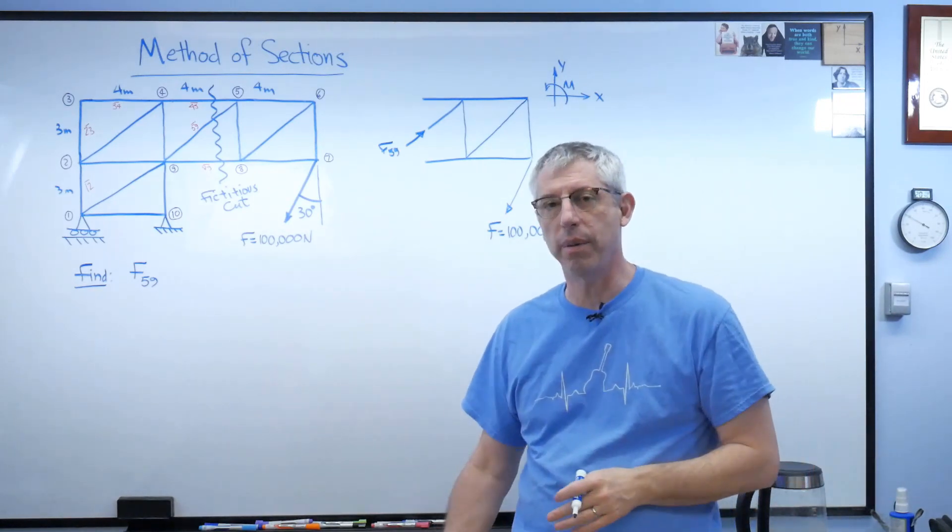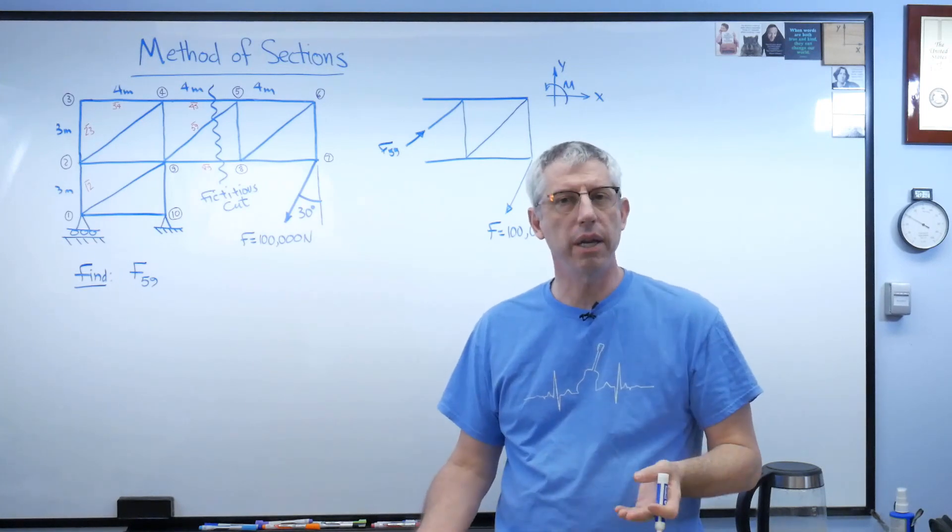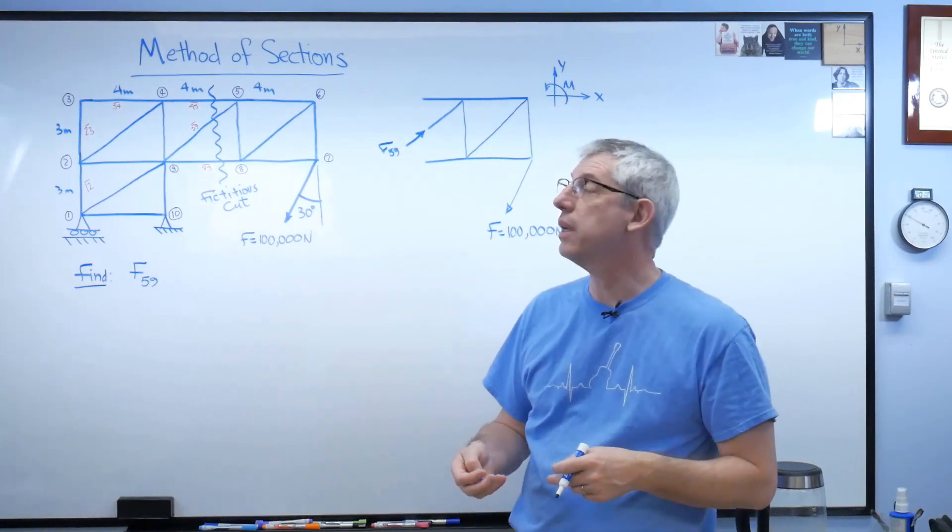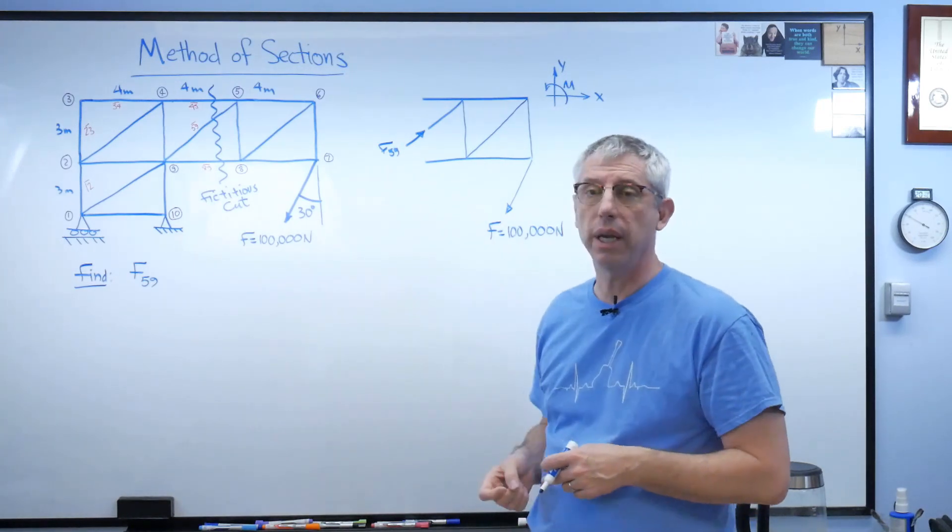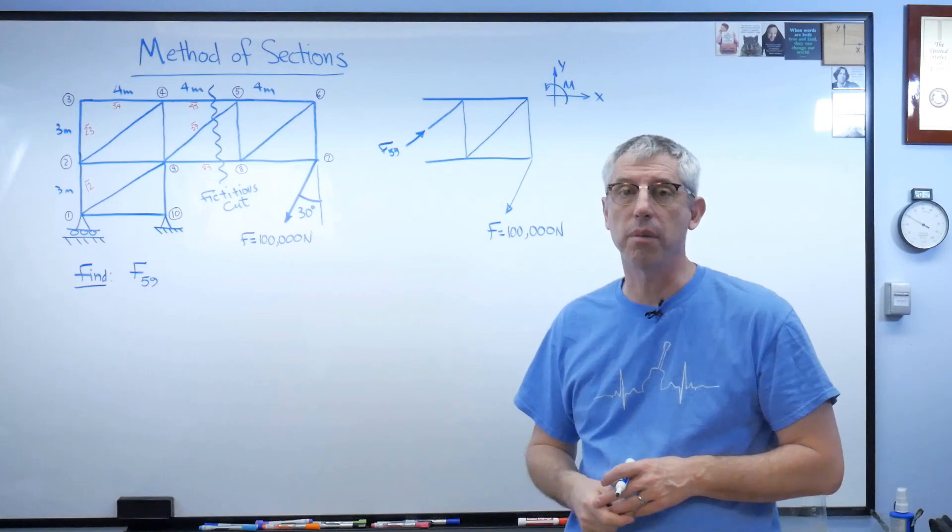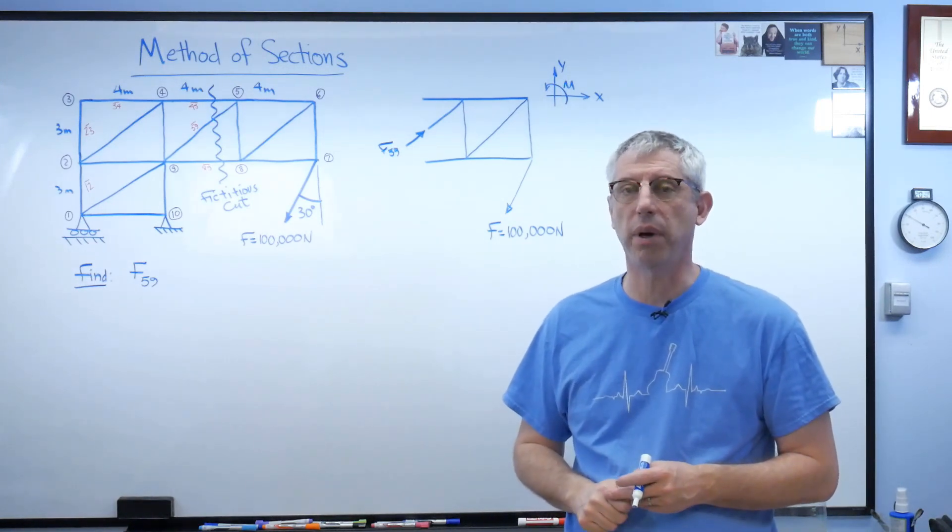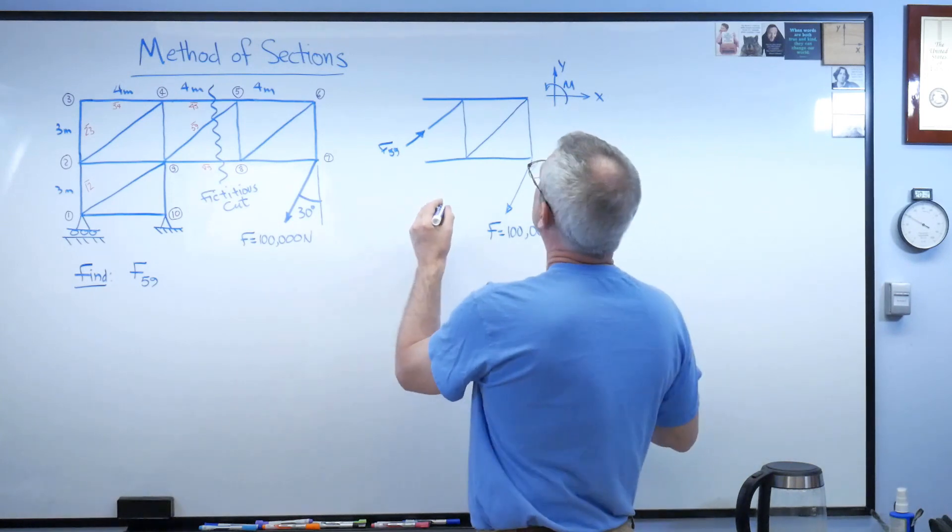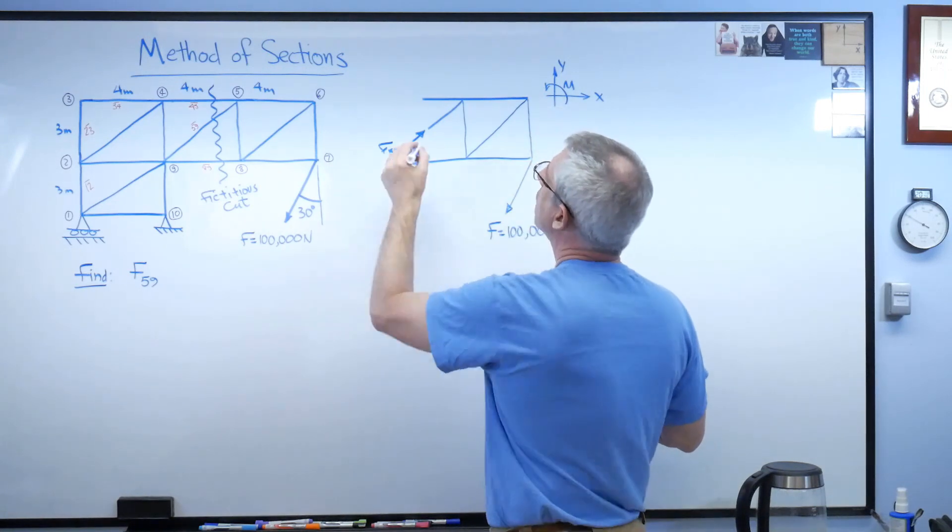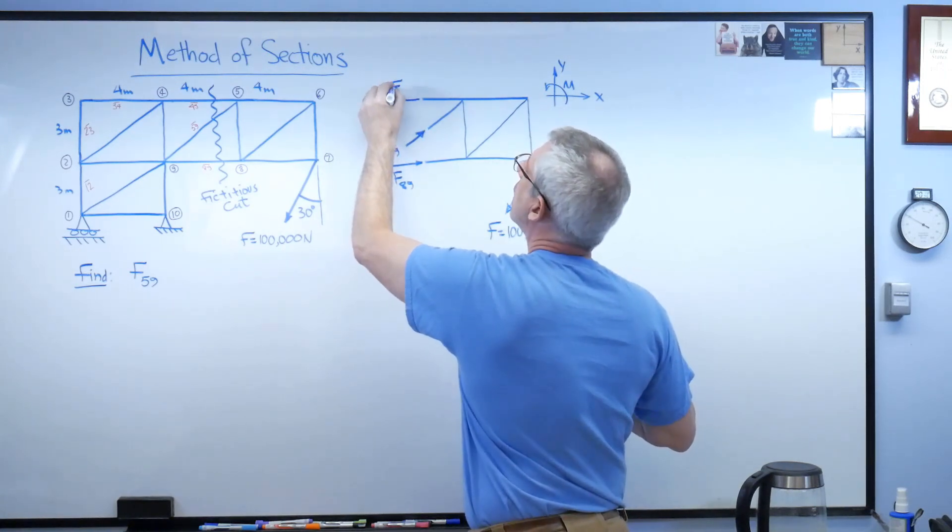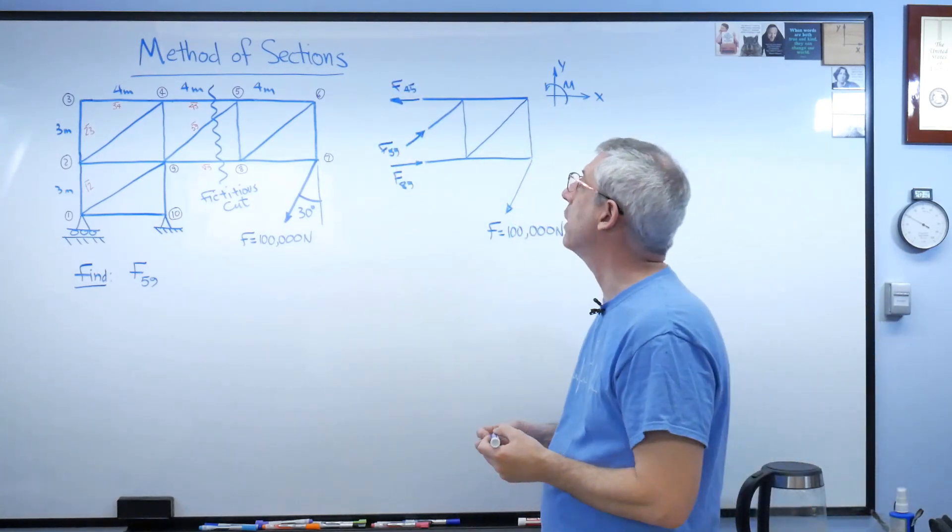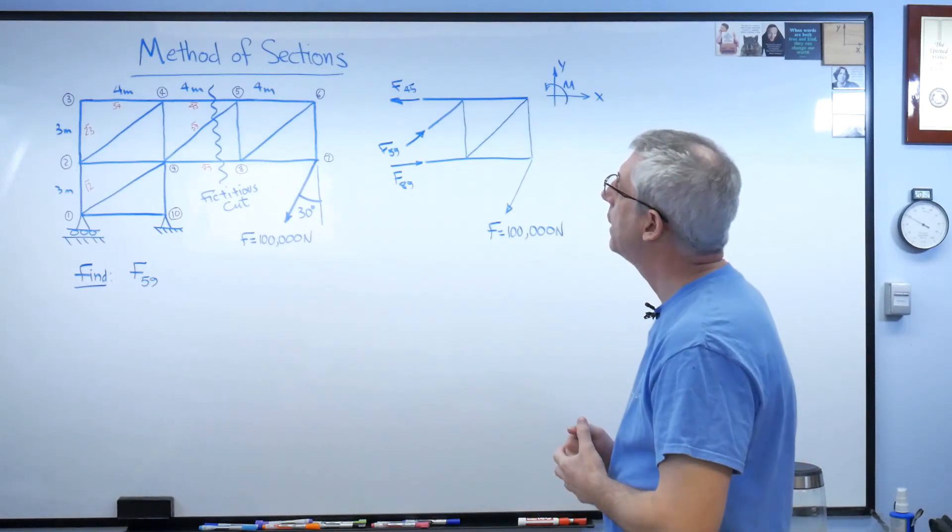Remember, physics doesn't know or care anything about your sign convention. Physics just works. The sign convention, coordinate systems and things like that, those are for us. Those are something we invent to keep track of things. So, if I happen to have guessed wrong, all that's going to happen is F5,9 will come out negative. That's okay. Negative numbers just as good as a positive one. One's not better than the other. So, let's see. I'm going to guess F8,9 is going in that direction. And I'm going to guess that F4,5 is going in that direction. I might be wrong, but there we go. It doesn't matter if I'm wrong. The numbers will just come out negative.